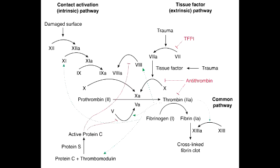What is Factor V Leiden? Factor V Leiden is an inherited disorder of blood clotting in which there is production of mutant Factor V that is resistant to degradation by activated protein C. As we know from earlier discussions, protein C's job is to cleave and inactivate Factor V.